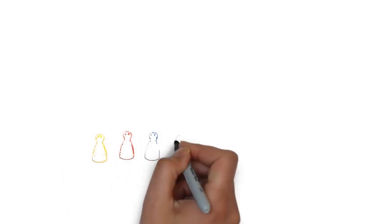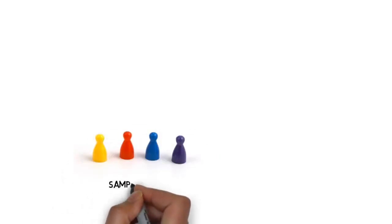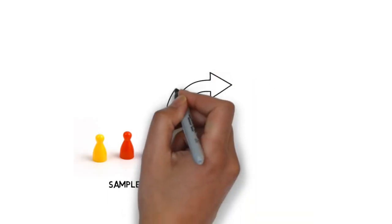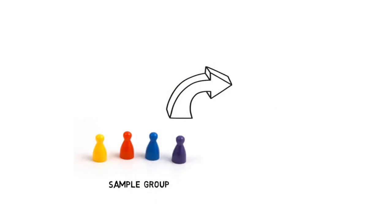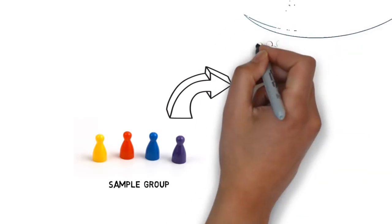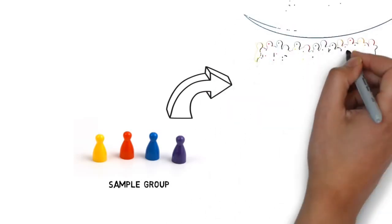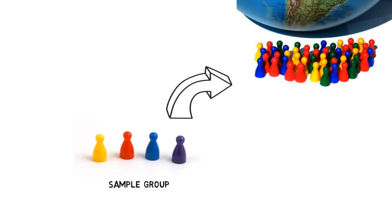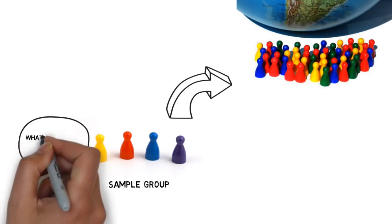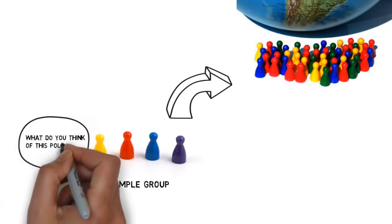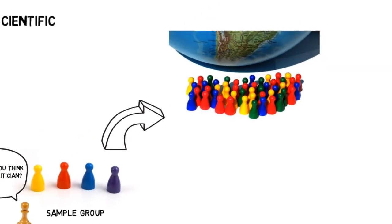It has the advantage of being able to use larger samples, which would then often be used to represent a larger group. A good example of this would be polling for an election. A sample group is used to represent the population and they are then asked specific questions that can be measured. It is then possible to gauge who is leading in the polls and therefore more likely to win the election.